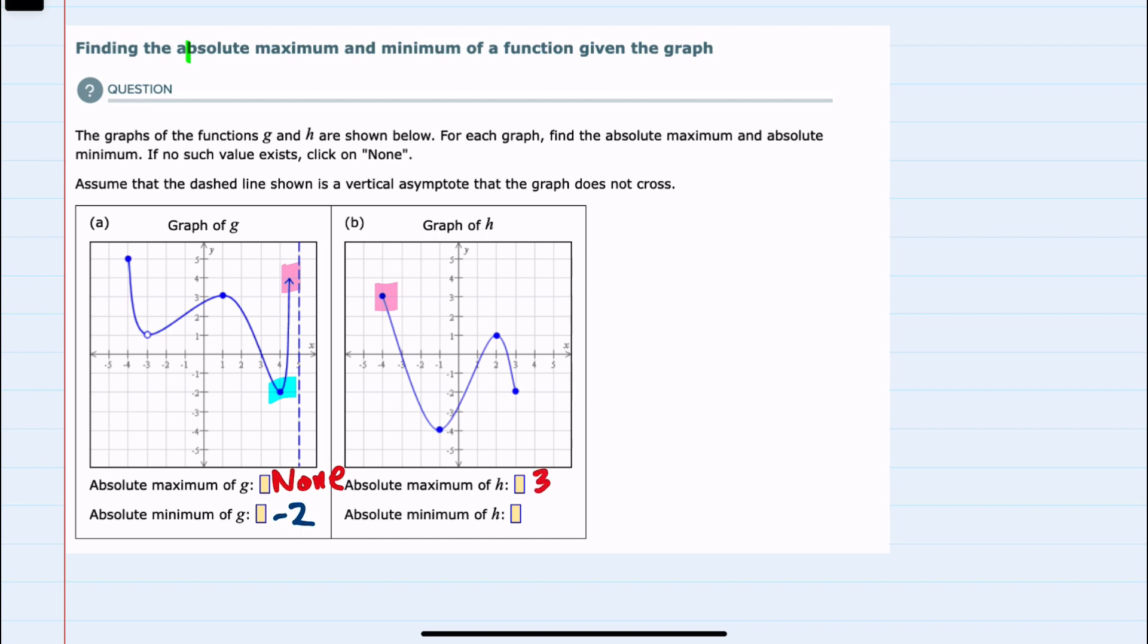And then for the minimum, the lowest that this graph ever goes occurs here, which has a value of negative 4.